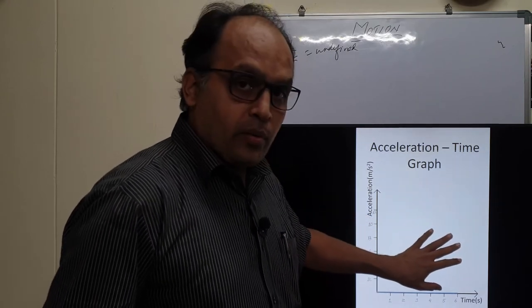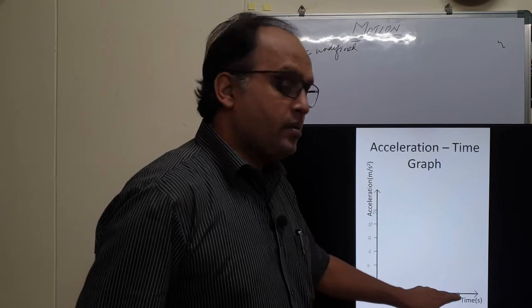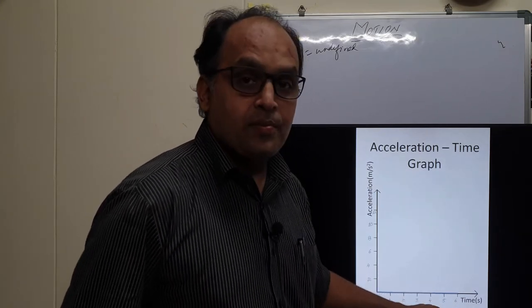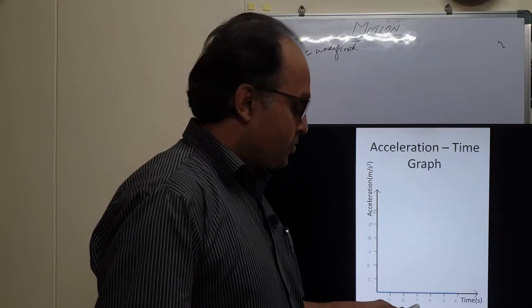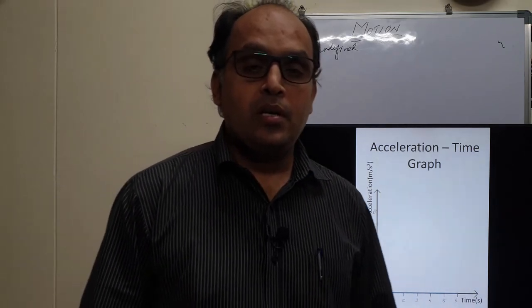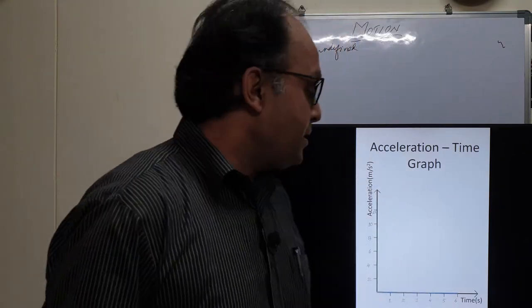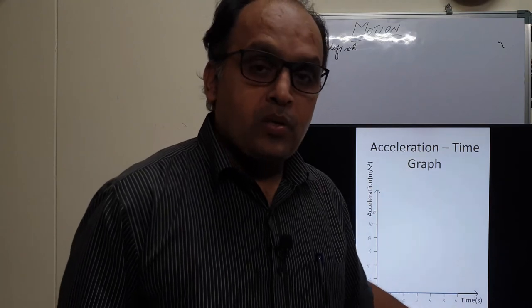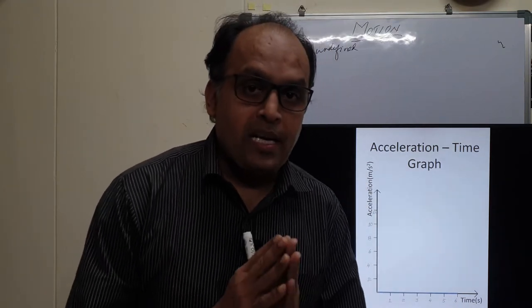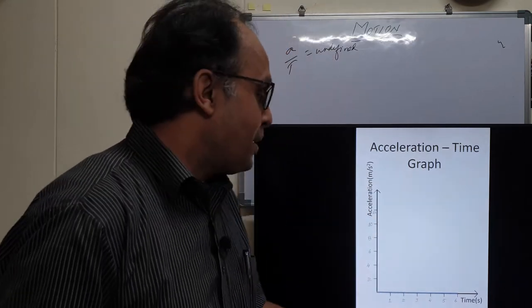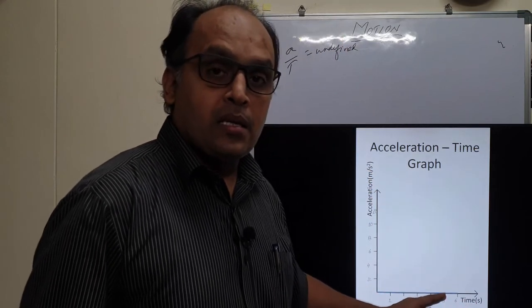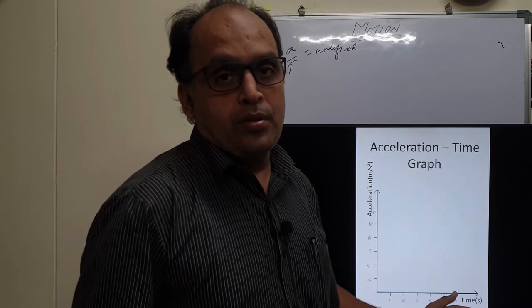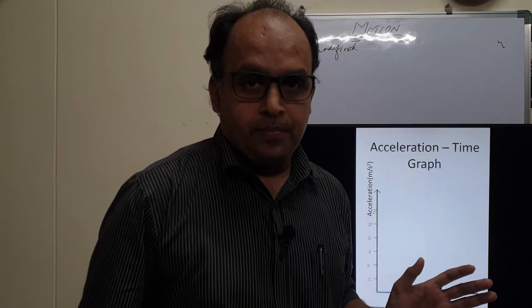For the last case in the acceleration-time graph, all the points are on the x-axis. After 1 second the acceleration is 0, after 2 it is 0, and so on through 6 seconds — there is no acceleration at any time interval. When the body has no acceleration, its velocity is not changing. So when all points of the graph lie on the x-axis, the acceleration is 0 and the velocity of the body is uniform.